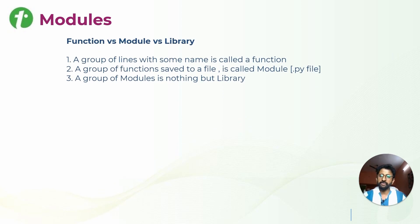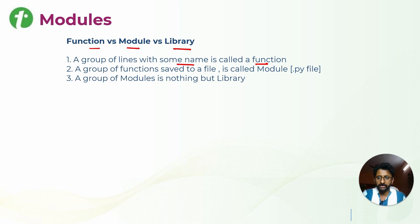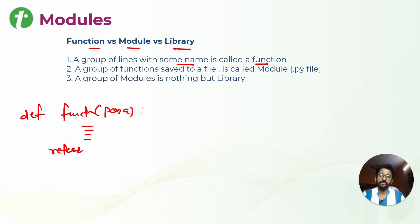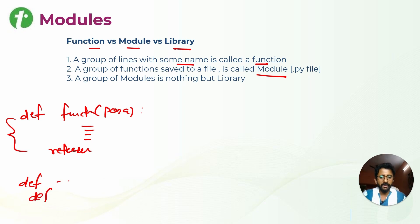What is the difference between function, module, and library? These are the three terms. A group of lines with some name is called a function. For example, we create a function with the def keyword, then there will be a function name, parameters, certain code definition, and return statements. A group of functions in one file is called a module - there can be n number of functions inside one .py file.